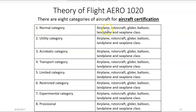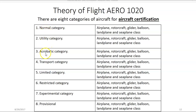The class of a normal category aircraft can be airplane, rotorcraft, glider, balloon, land plane, and seaplane class. It's a little confusing. When it comes to aircraft certification, categories include normal, utility, acrobatic, and so on — referring to how the aircraft is going to be used. The class includes airplane, rotorcraft, glider, balloon, land plane, or seaplane class.